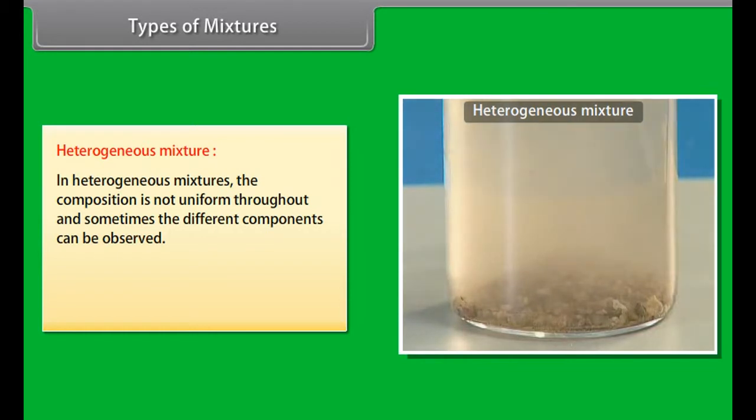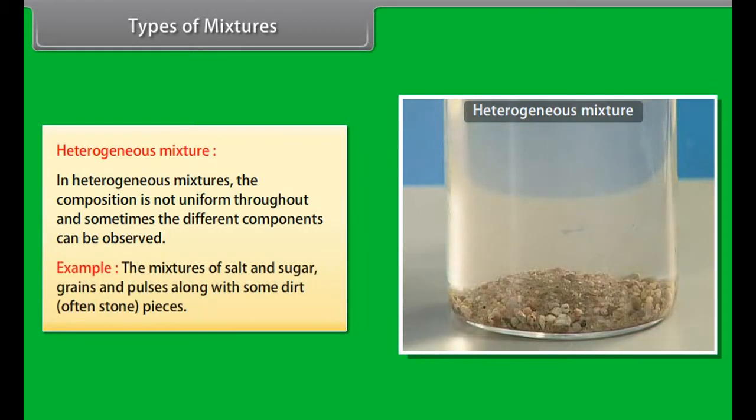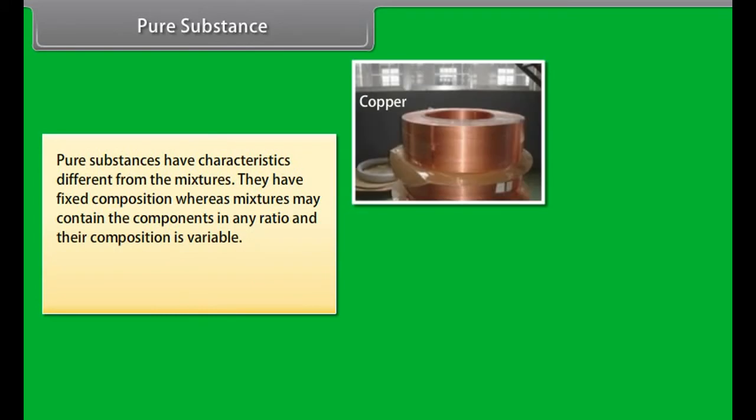A mixture contains two or more substances present in it, in any ratio, which are called its components. For example, coffee contains a complex mixture of chemical compounds.